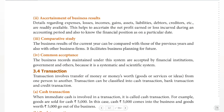The second advantage is ascertainment of business results. Details regarding expenses, losses, incomes, gains, assets, liabilities, debtors, creditors, etc., are readily available. This helps to ascertain the net profit earned or loss incurred during an accounting period, and also to know the financial position on a particular date. Business results are ascertained easily.